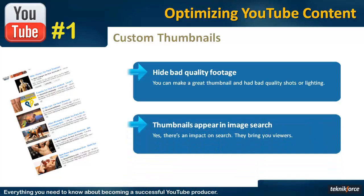If you were believing that thumbnails only help you by attracting a viewer's attention, there is a bigger impact than that. The thumbnails you put on YouTube appear in Google image search for the keywords you've selected. The thumbnail file name is also very important, so make sure you give your thumbnail file a proper keyword name before uploading it to YouTube. Whenever people search for images in Google image search, there's a strong chance your thumbnail will appear in the results, and that can bring you more viewers.